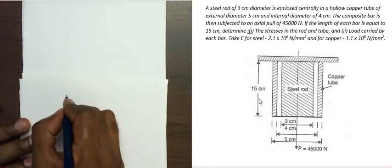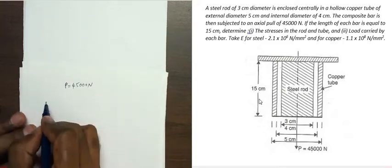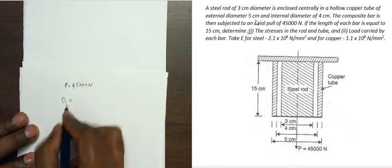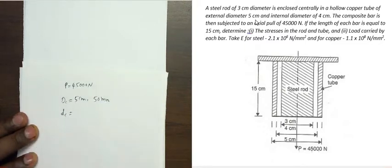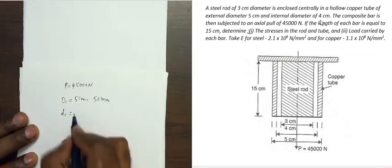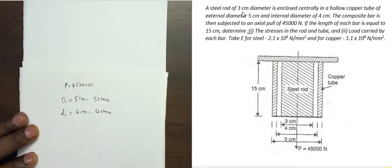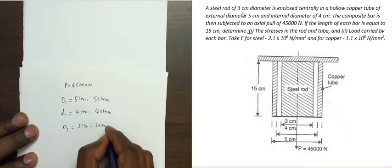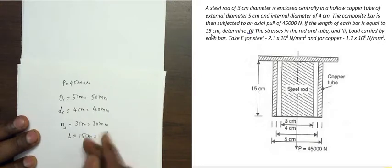First we write down the given data. Load P is equal to 45,000 N. For the copper tube, the external diameter of copper is 5 cm, that is 50 mm. The internal diameter of copper DC is 4 cm, that is 40 mm. For the steel rod, DS is 3 cm, that is equal to 30 mm. The length of each bar L is equal to 15 cm, that is equal to 150 mm.